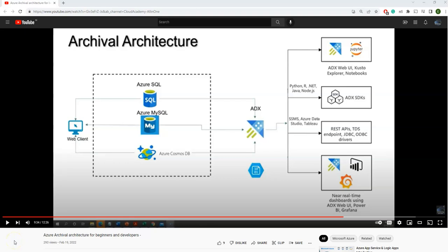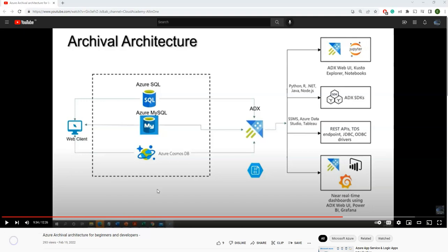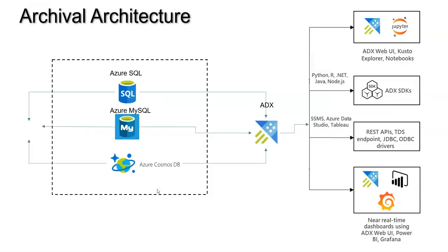In my previous architectural videos, I covered Azure ADX archival architecture at a high level. I've seen questions in the comment section about how we can take other options available or elaborate the ADX architecture. In this video, I'm going to cover the alternates and also how we can take it further on the ADX. This architecture shows how we can use ADX for archival from various data sources like Azure SQL, Azure MySQL, and Azure Cosmos DB.